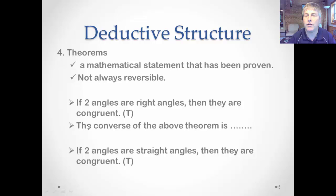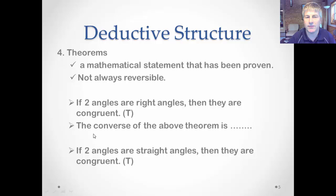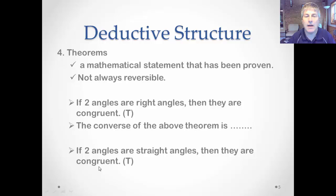The converse of that theorem would be: if two angles are congruent, then they are right angles. Think about that — does that make sense? Any two congruent angles must be right angles? Hopefully you said no, because two angles could both be 75 degrees or 142 degrees. Here's another theorem: if two angles are straight angles, then they are congruent. The converse — if two angles are congruent, then they're straight angles — is not necessarily true. Memorize these theorems; you'll use them in the proof process.